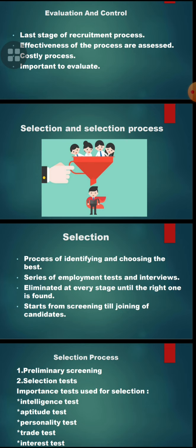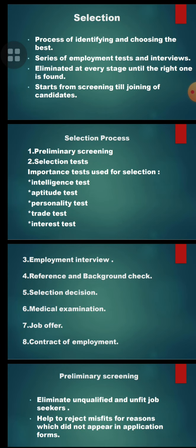At the last stage, the company will choose the right one — the best one. In the selection process, there are eight steps: the first is preliminary screening, the second is selection tests, the third is employment interview, the fourth is references and background check, the fifth is selection decision, the sixth is medical examination, the seventh is job offer, and the eighth is contract of employment. The first one is preliminary screening.